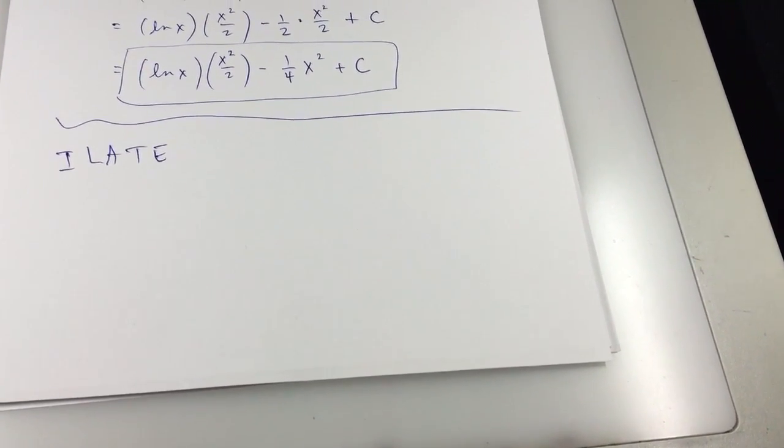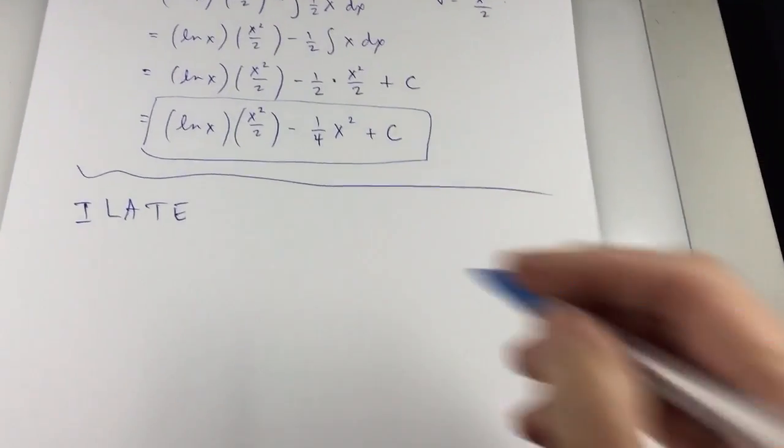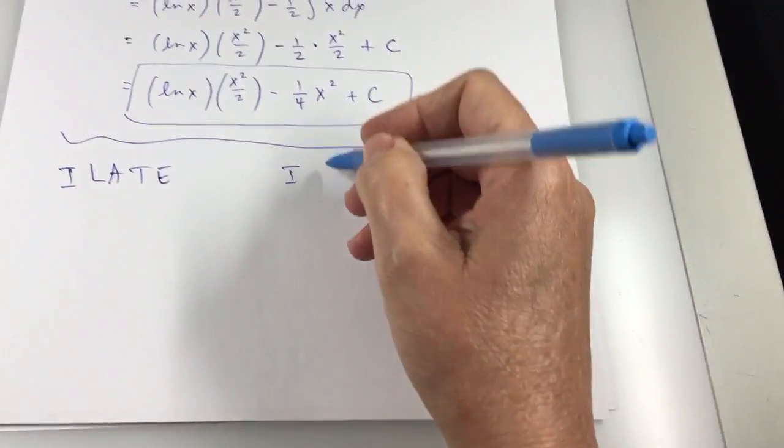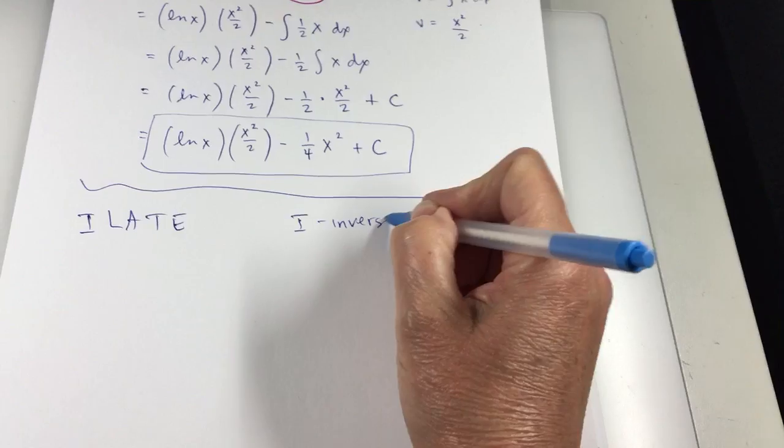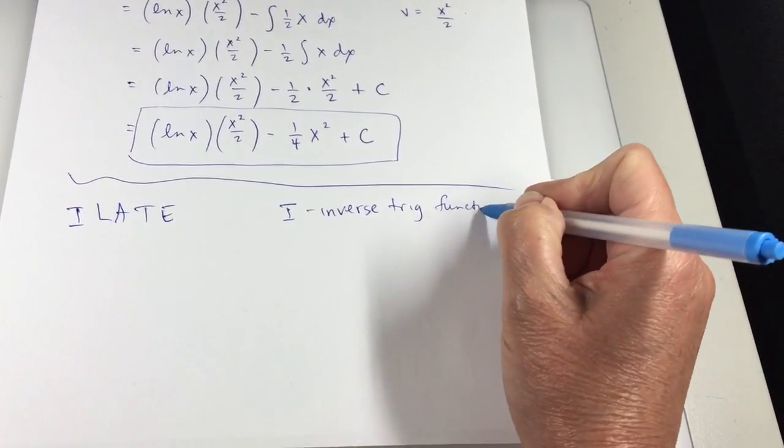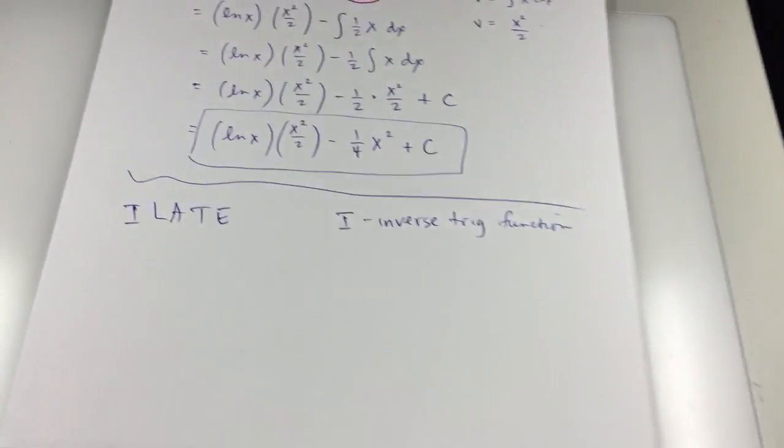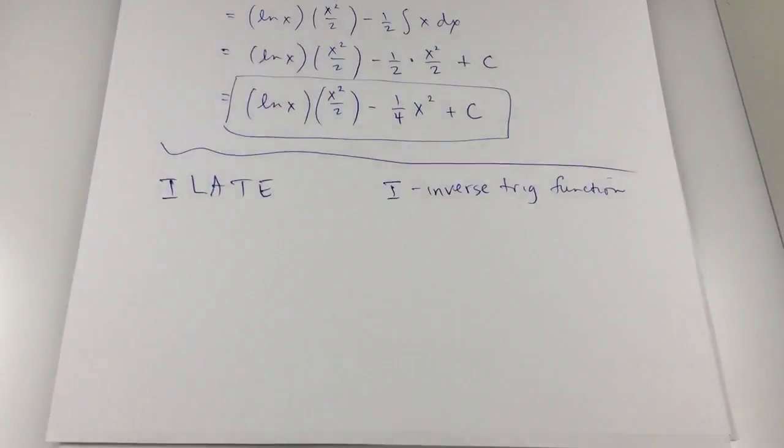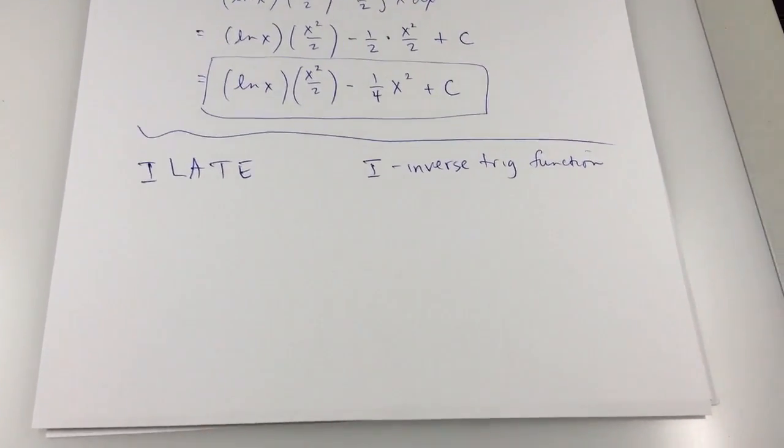and you look at the expression. I is inverse trig function. If there's an inverse trig function in the problem, that's U. Everything else is DV.